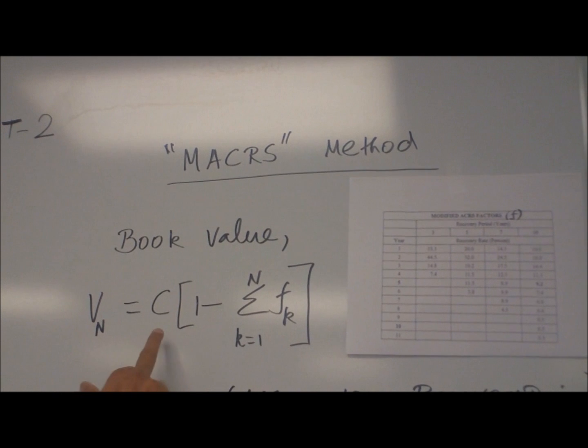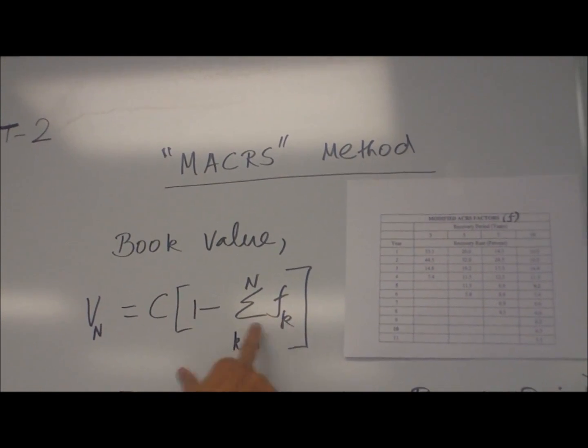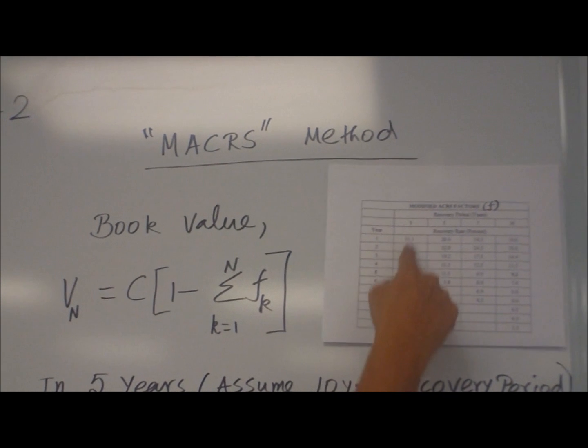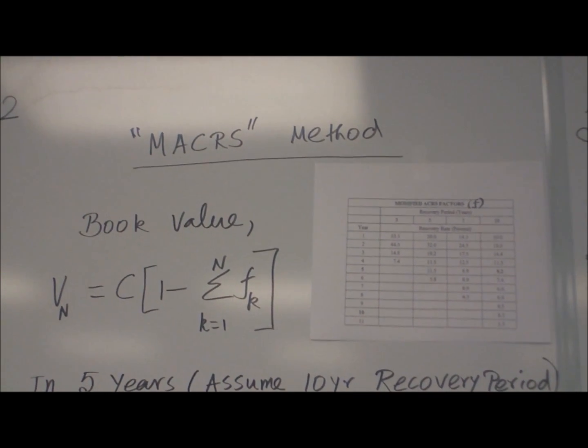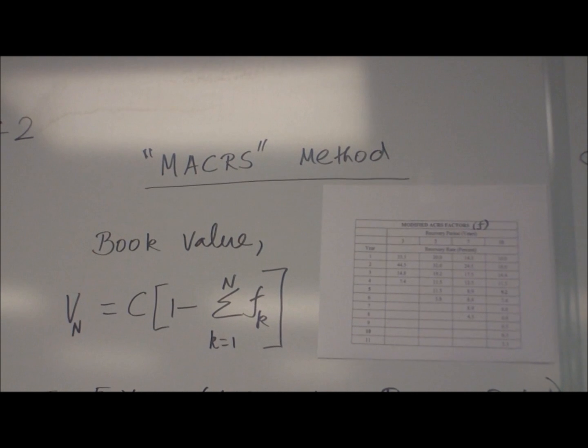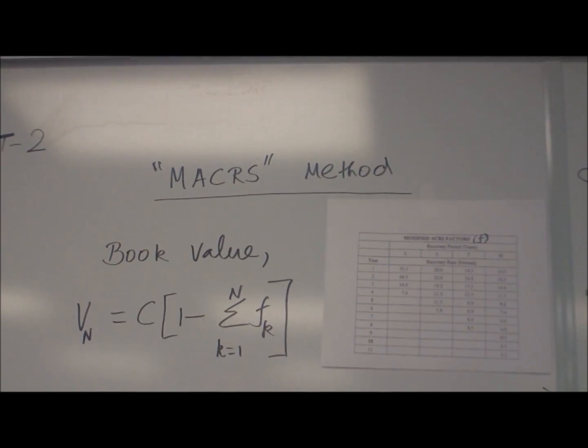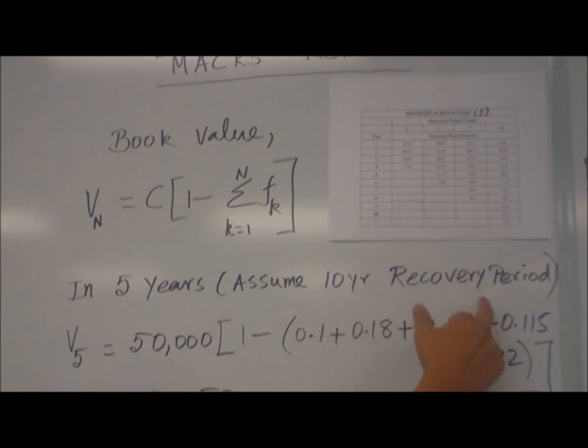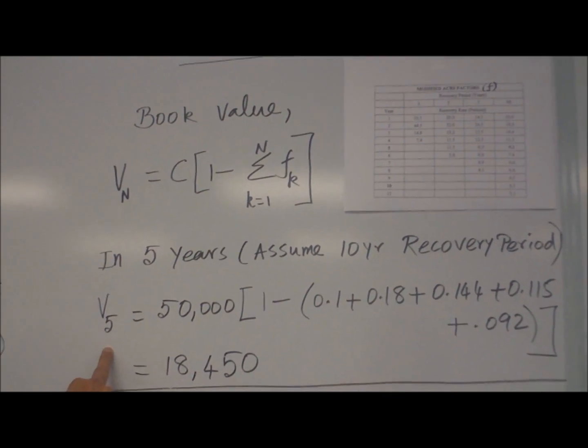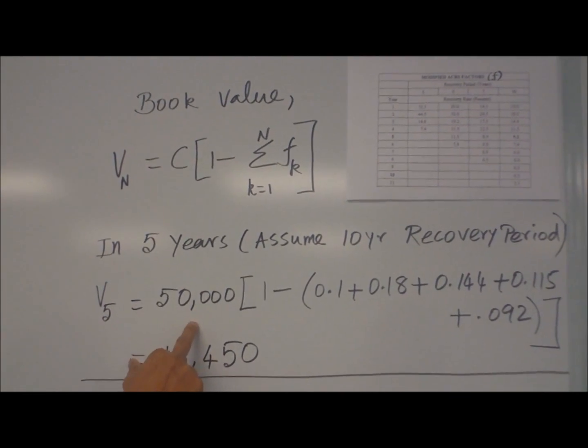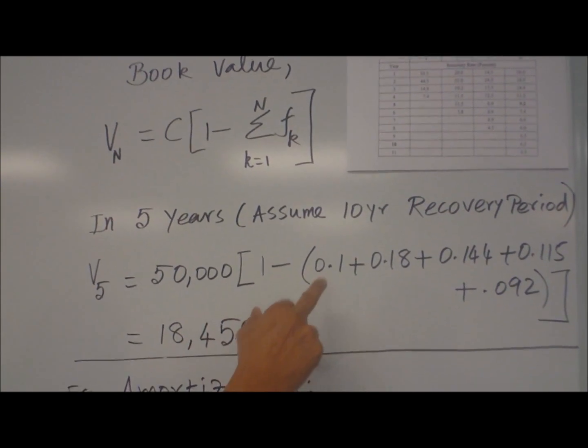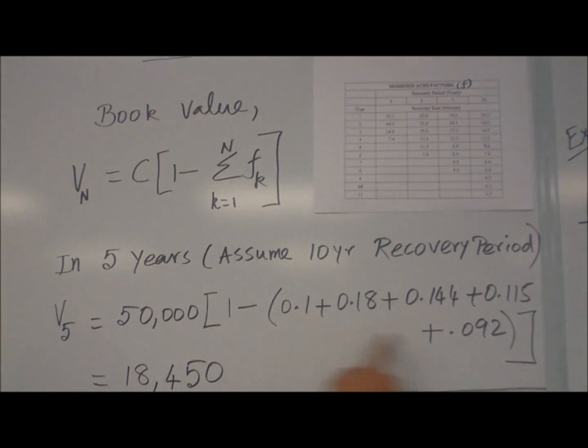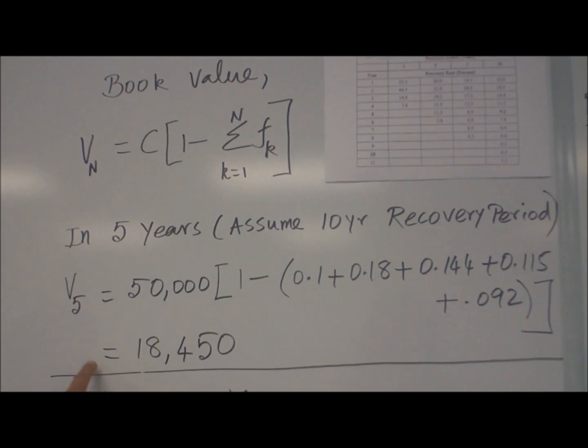The formula is V_N equals C times (1 minus sum of F_k), k equals 1 to N. The F_k are the values given in each column. They are given in percentage. When you apply, use them in decimal form. So in 5 years, assuming 10 year recovery period, you can calculate V_5 equal to C, $50,000, times 1 minus F1, F2, F3, F4, F5 expressed in decimal form. Apply that, you calculate $18,450.